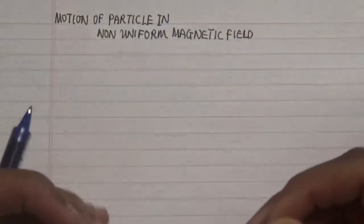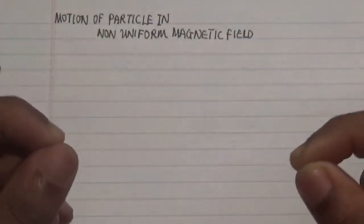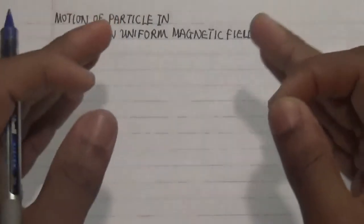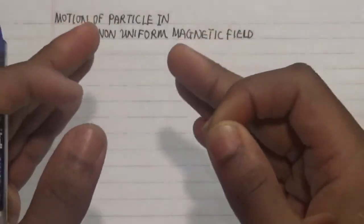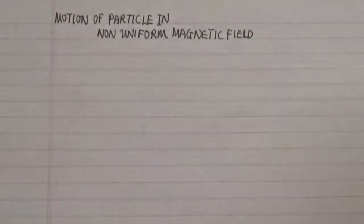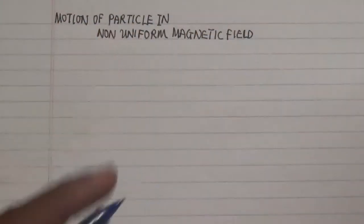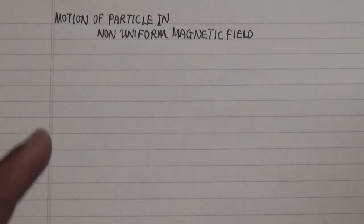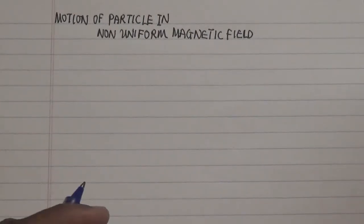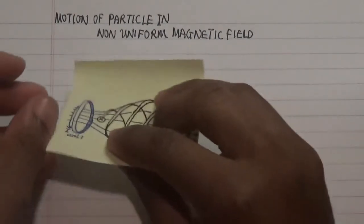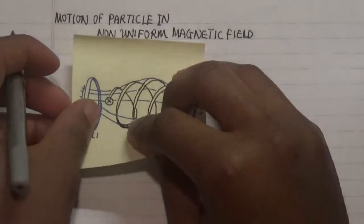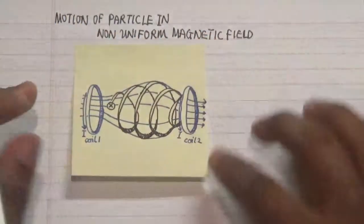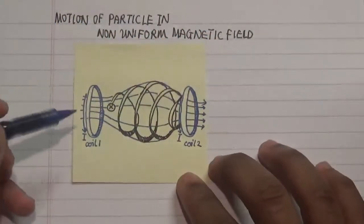Now in here we're going to be looking at something a little bit similar but different, because we'll be looking at a non-uniform magnetic field. The question is: how can we generate a non-uniform magnetic field? An example of this is this particular diagram here.